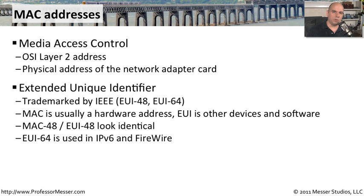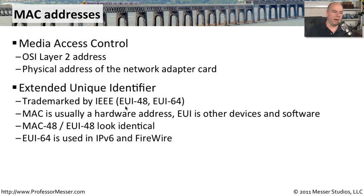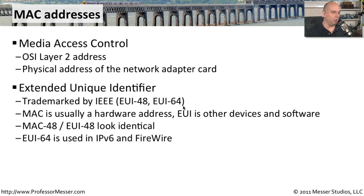We usually refer to a MAC address as an extended unique identifier. We used to call them MAC 48s because there are 48 bits in a typical Ethernet MAC address. But the IEEE has trademarked a new preferred term called EUI 48, where EUI stands for extended unique identifier. There's also a type called EUI 64, where there are 64 bits inside that hardware address.